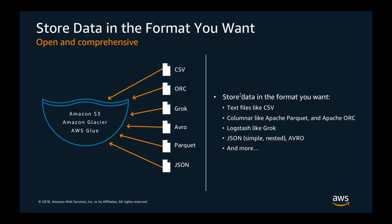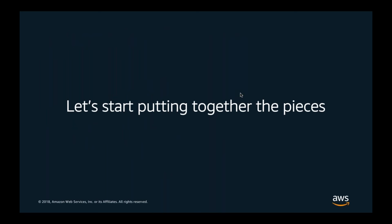An important consideration from an analytics perspective is keeping data in open formats. Since S3 is an object store it doesn't dictate any specific format — you can store any binary objects. For analytics, it's important to keep data in open formats like CSVs, JSONs, or analytics-optimized formats like Parquet, ORC, and Avro, so you can use diverse analytical engines like Hadoop, Presto, and Spark.